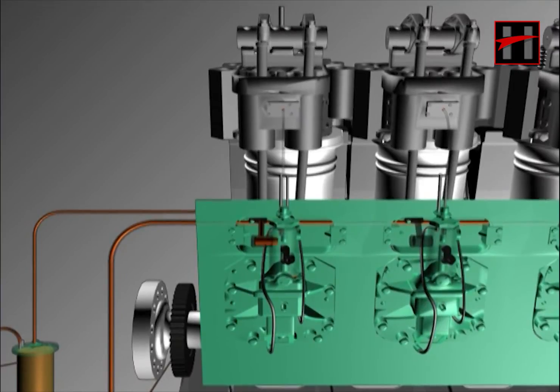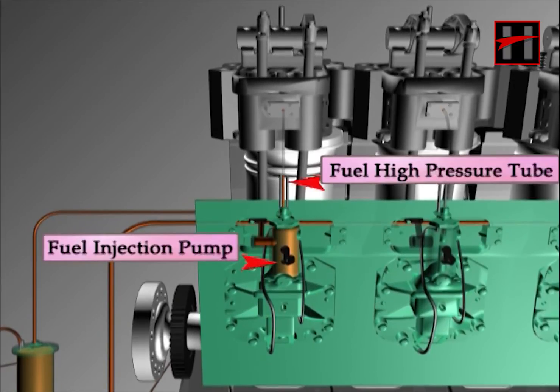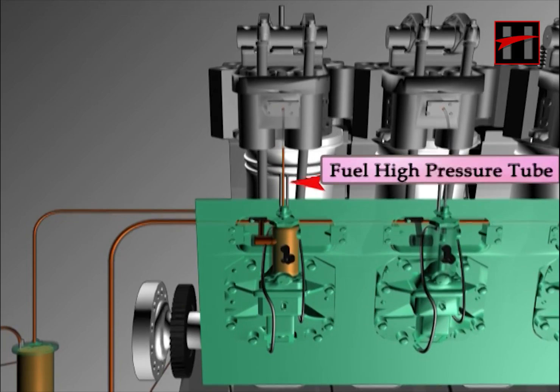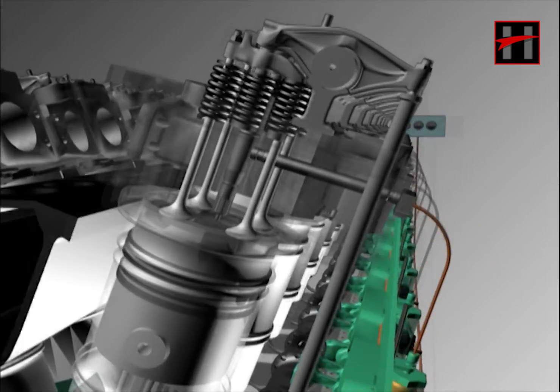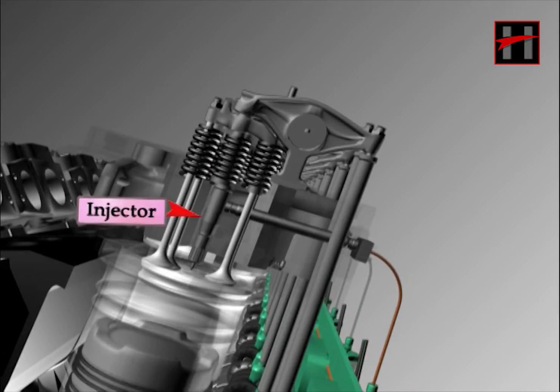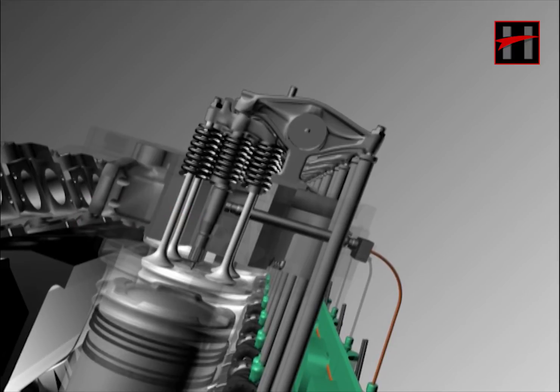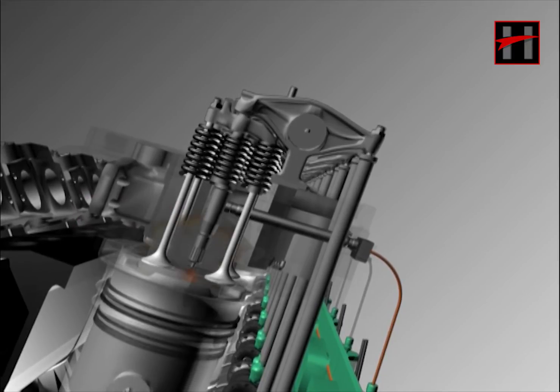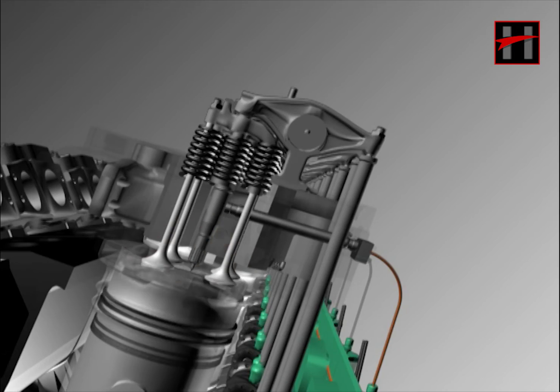On starting the engine, fuel oil from the fuel injection pump passes through the high pressure tube and reaches the injector. From the injector, high pressure fuel oil gets sprayed on the piston with a pressure of 3,900 to 4,050 psi, because of which fuel gets burnt with high temperature air.